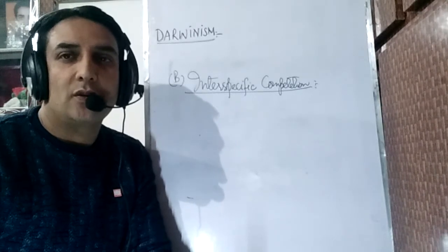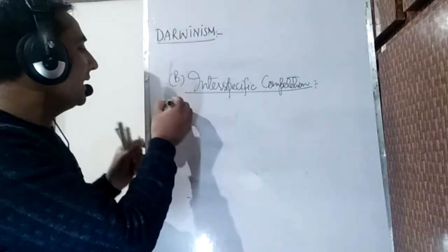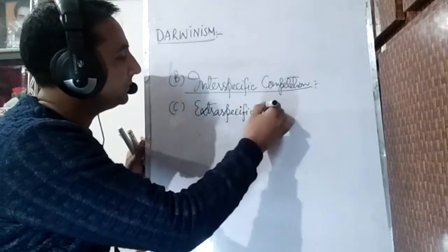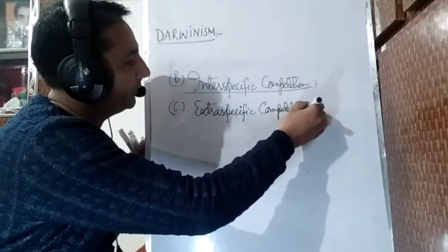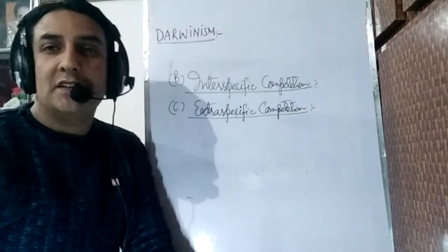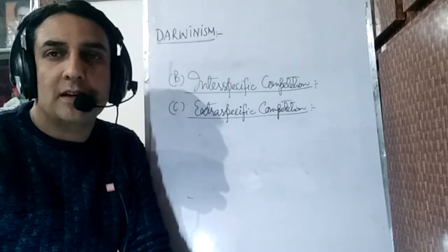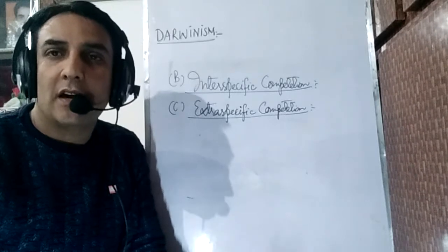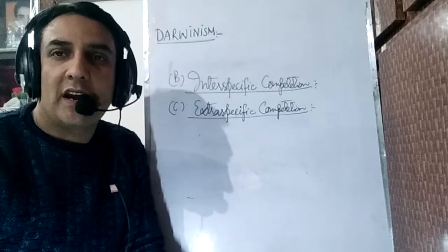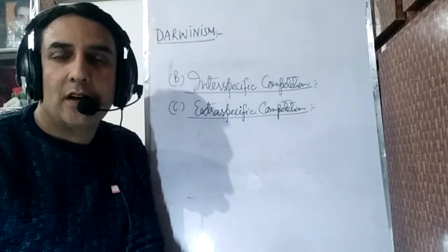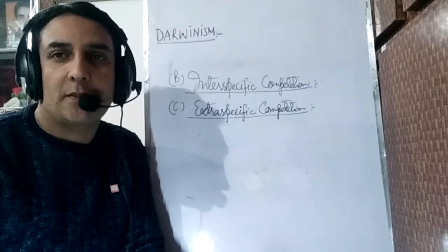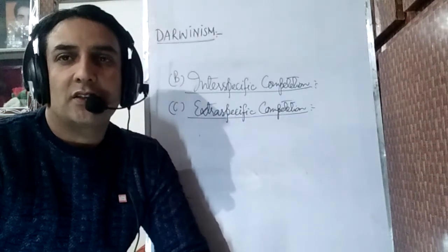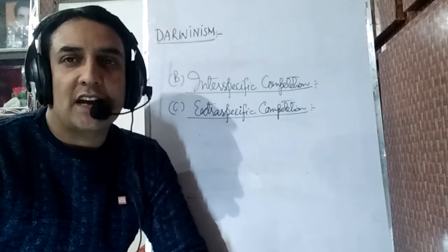The third type is extraspecific competition. When an organism faces competition with its environment, it is known as extraspecific competition. For example, if an earthquake occurs, some organisms survive and some do not — there is competition with the environment. Similarly if floods occur, if an epidemic or disease outbreak happens, these are environmental factors with which an organism must fight in order to survive. When an organism competes with environmental factors, this is called extraspecific competition.